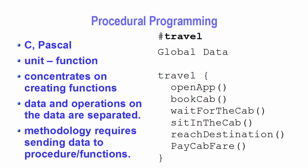Traditional programming languages such as C or Pascal were called procedural or structural programming languages, where the basic unit was functions. Programming in these languages involves choosing a data structure, designing the algorithm, and then translating that algorithm into code. If this sounds a little confusing, let me explain it with an example.